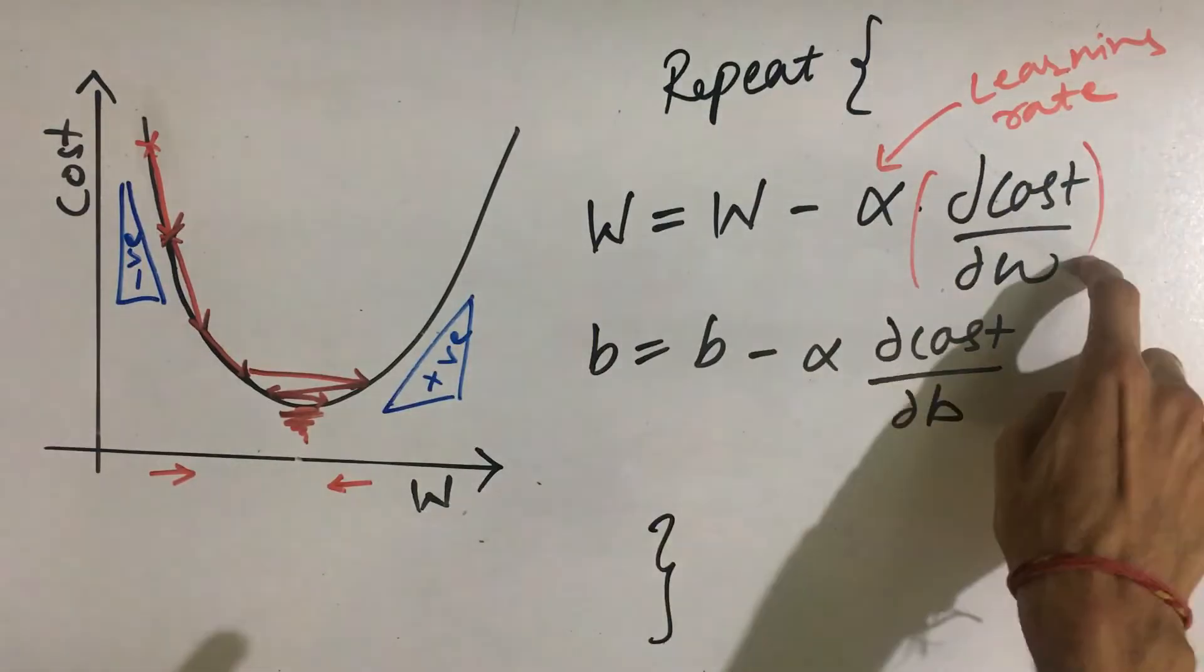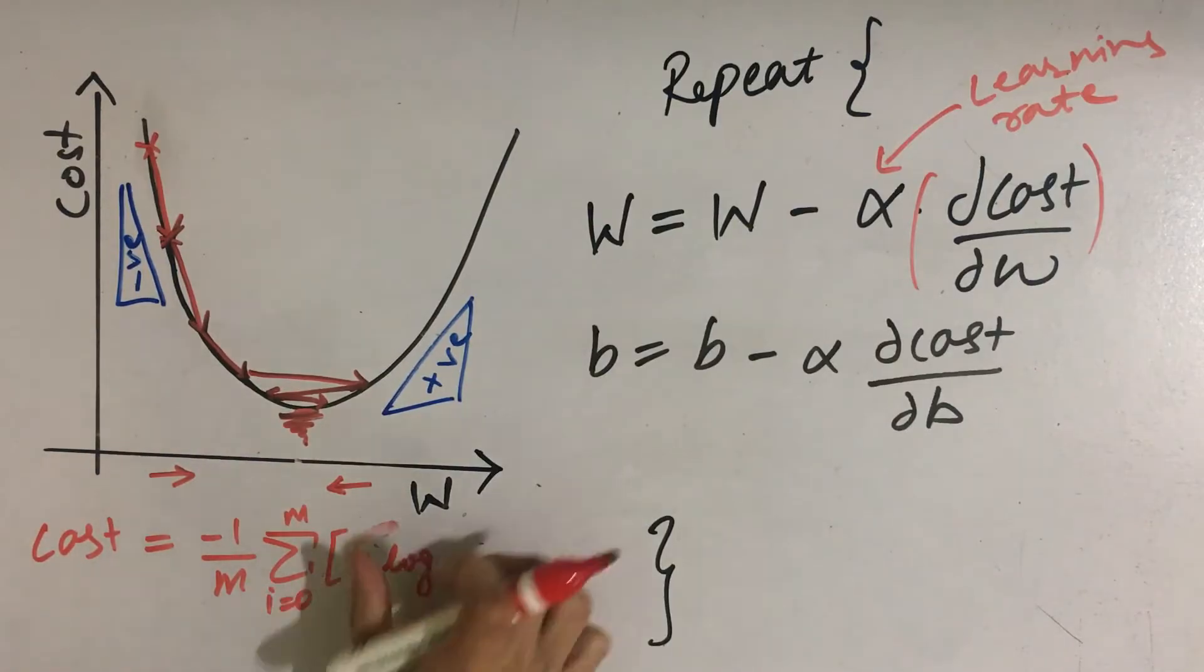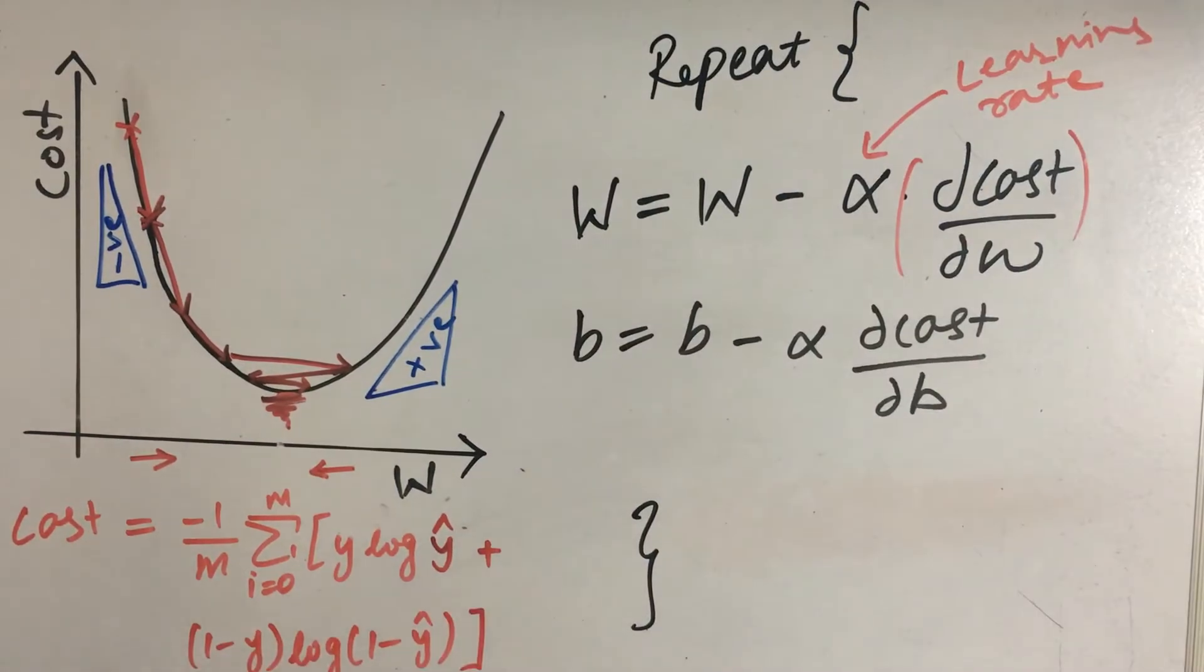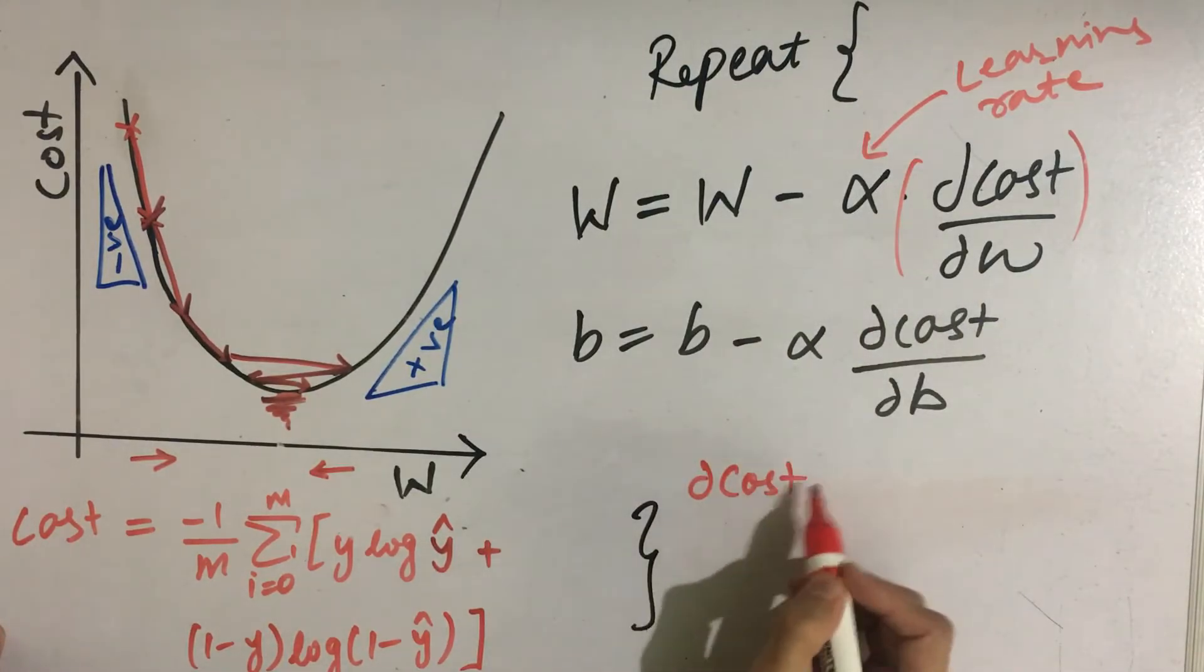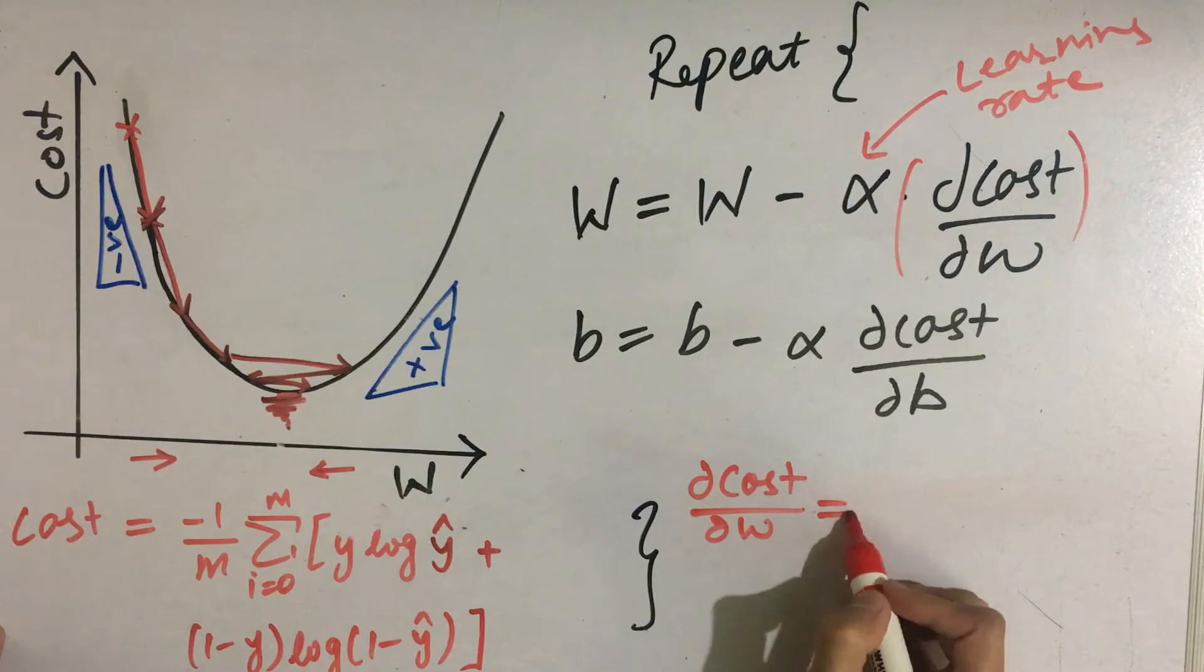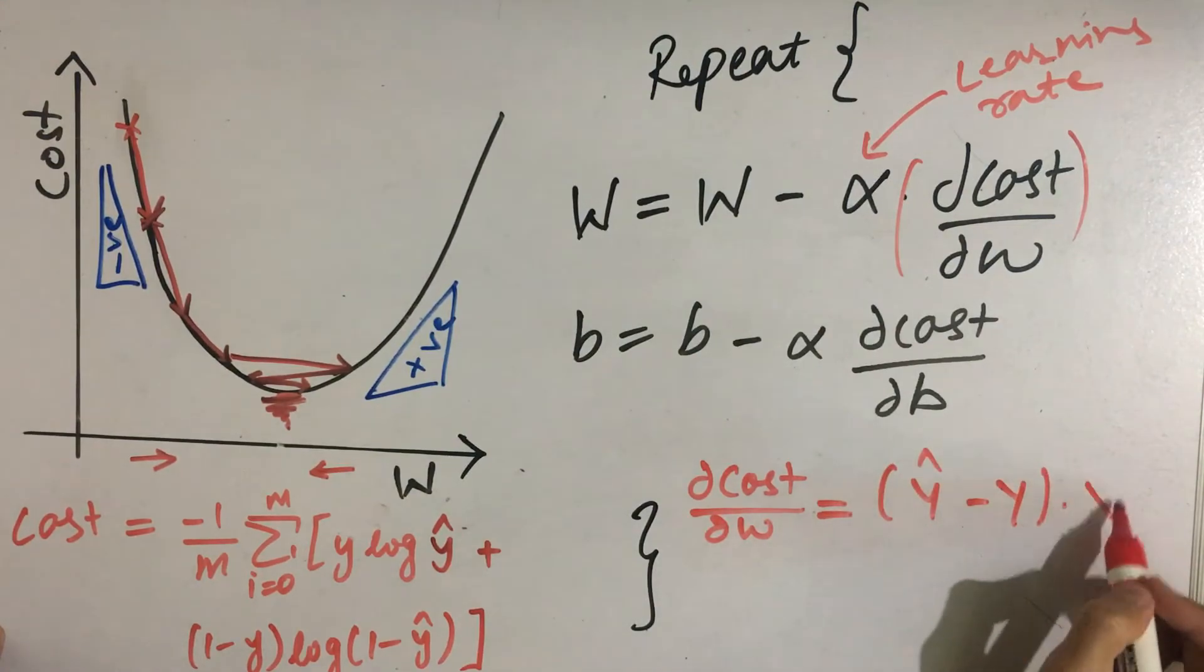Let's find out what will this be. Now our formula for the cost function was [formula shown]. Now, if you know the derivative or the differential calculus, then you will find that del cost by del w comes out to be (y hat minus y) multiplied by x.